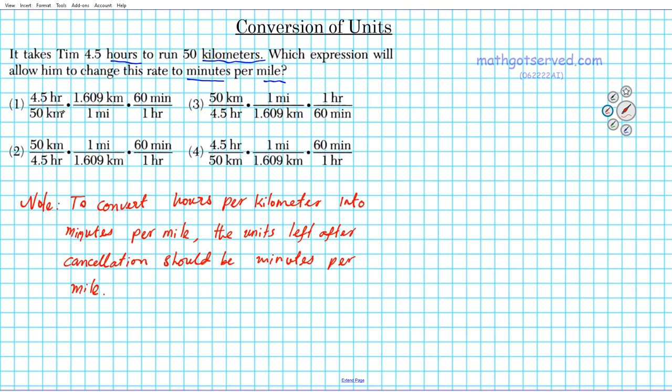You have a kilometer here that takes that out, and then you have hour here that takes that out. What are you left with? You're left with minutes in the numerator and miles in the denominator.